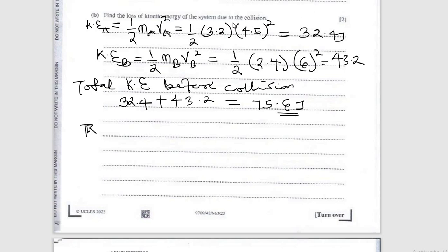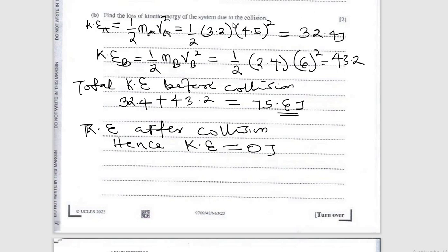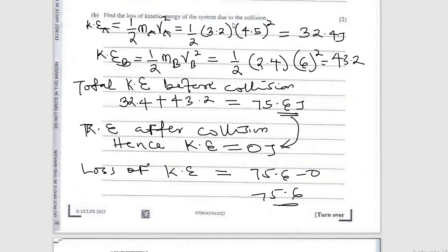Kinetic energy after collision: remember that after collision the bodies came to rest, so kinetic energy after is zero. From 75.6 to 0, there is a loss in kinetic energy. So loss of kinetic energy = 75.6 − 0 = 75.6 J. That's the loss of kinetic energy in the system.